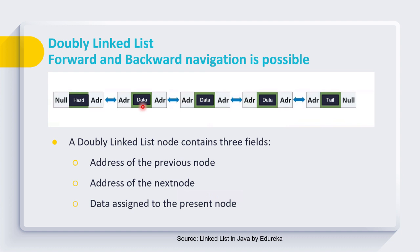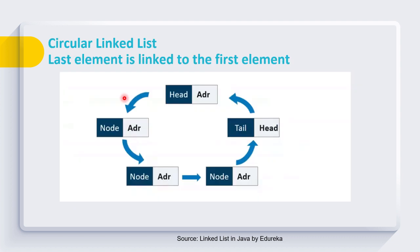The third part is the data which represents the data present in the current node. In case of the header node, the address of the previous node is null because this is the first node, and in case of the tail node the address of the next node is null because this is the last node. Due to storage of these previous and next node addresses, forward and backward navigation is possible in doubly linked list.